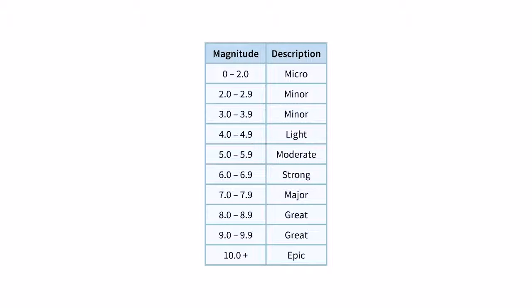On the Richter scale, anything below 2.0 is undetectable to most people and is called a microquake.